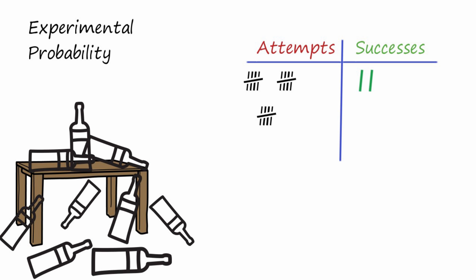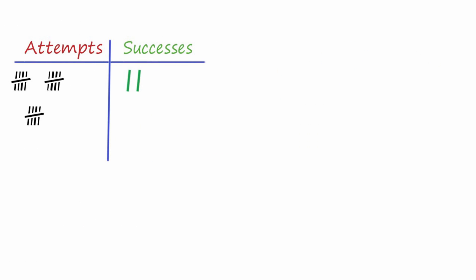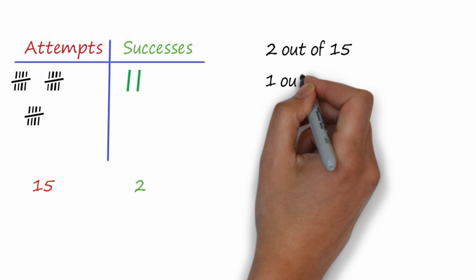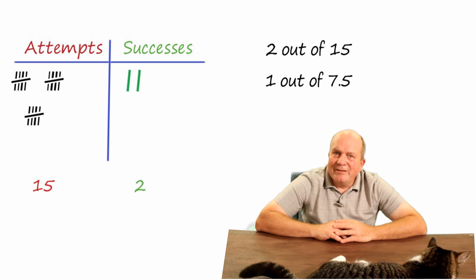So you keep track of all your attempts, all your successes. Maybe a hundred attempts, maybe two hundred attempts or more. When you're done, total up the number of attempts, total up the number of successes. Now write your experimental probability as the number of successes out of the number of attempts, like two out of fifteen. In this case, if you want, you can divide through by the number of successes to generalize it, such as one out of seven point five if you divide by two. This is how we calculate experimental probability.